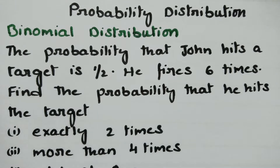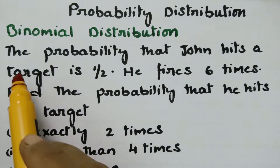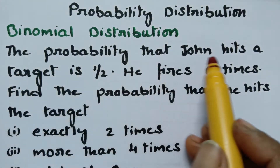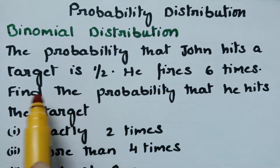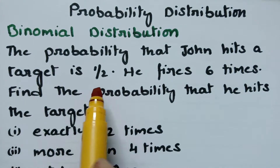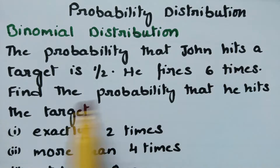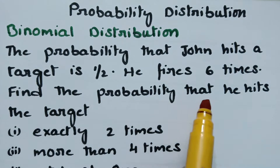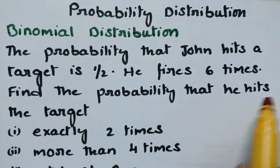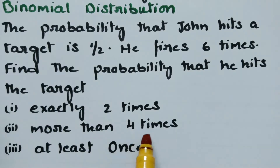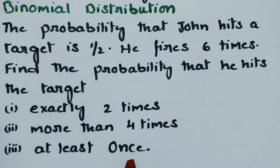Today's video is on binomial distribution. We have a problem here: the probability that John hits a target is half. He fires 6 times. Find the probability that he hits the target exactly 2 times, more than 4 times, and at least once.